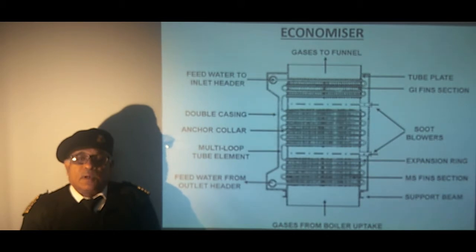It consists of solid forged mild steel inlet and outlet headers to which multi loop tube elements are attached by expansion and bell mouthing or welding through stub tubes. Solid drawn mild steel tubes with MS fins are used for temperature above 138 degree centigrade whereas GI fins are used below this temperature in order to protect plain tube from corrosive attack. Tubes are supported by tube plates and are equipped with soot blowing arrangement to maintain clean tube surface for high efficiency and to prevent the uptake fire.